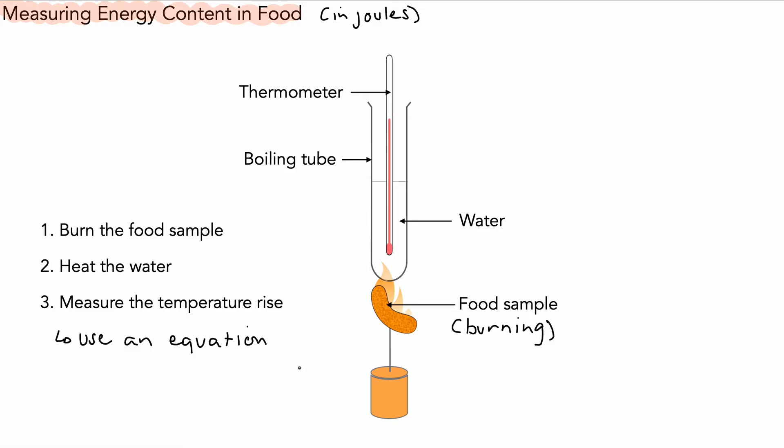The only problem with this method is while it does give you a figure in joules, this method is not very accurate. The reason why is the heat energy comes from the food and goes into the water, which is what we want, but unfortunately a lot of it will go off into the surroundings. Even some of that heat energy that does get into the water will also be transferred to the surroundings through the glass or through the top end of the tube.